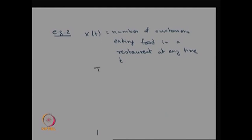Therefore, the possible values of the parameter space T is going to be T greater than or equal to 0, and the possible values of S — since it is a count — are going to be countably finite or countably infinite. Therefore, this collection of random variables over T is going to be a continuous time, discrete state stochastic process.